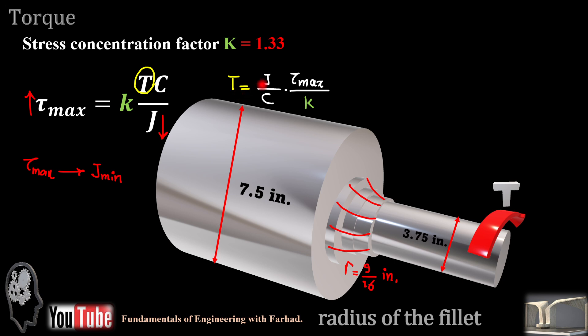T is J over c, if you bring it to this first part, J over c times tau maximum over stress concentration factor. And J over c is simply a half of pi c cubed for a smaller shaft. And if you do the math, it gives you 10.35 inch cubed.